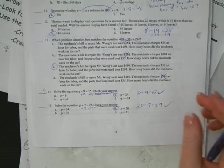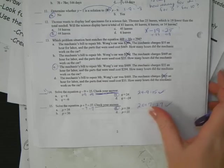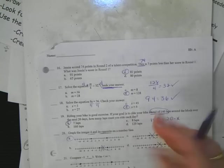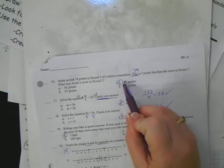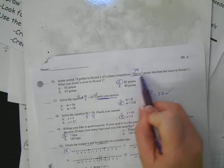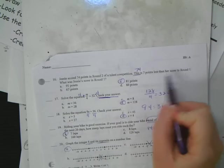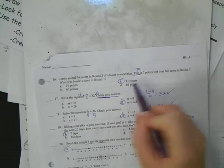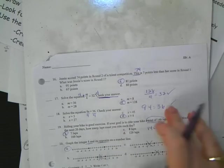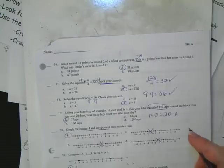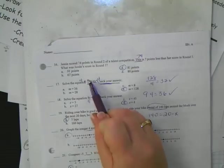Number 18, 9 times S equals 36. Divide both sides by 9. S equals 4. What times 9 is equal to 36? Number 19, riding your bike is good exercise. If your goal is to ride your bike for 140 laps over the next 20 days, how many per day? So I just need to do 7 laps per day to do 140 total.